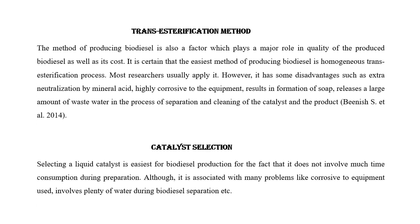Next is the transesterification method. The method of producing biodiesel is also a factor which plays a major role in the quality of the produced biodiesel as well as its cost. It is certain that the easiest method of producing biodiesel is the homogeneous transesterification process, and most researchers usually apply it. However, it has some disadvantages such as extra neutralization by mineral acid, being highly corrosive to the equipment, resulting in formation of soap, and releasing a large amount of wastewater in the process of separation and cleaning of the catalyst and the product.